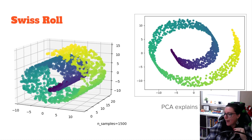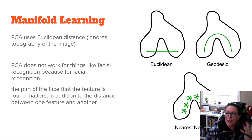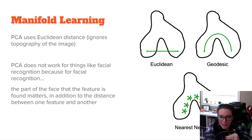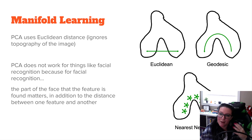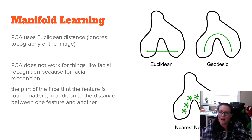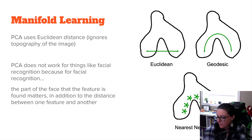These are manifold learning methods. We use them when we want to take into consideration the topography of the image — for things like facial recognition — because we need to identify not just the distance between one feature and another, but how it fits within the rest of the shape.